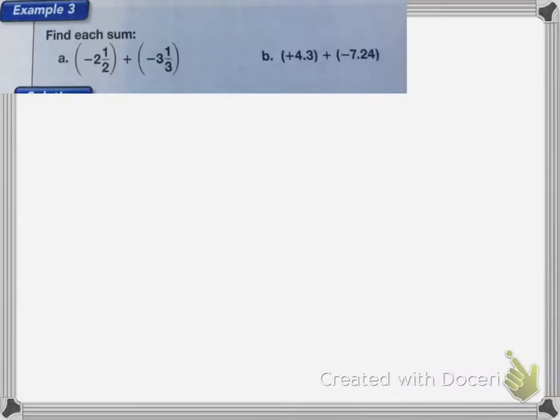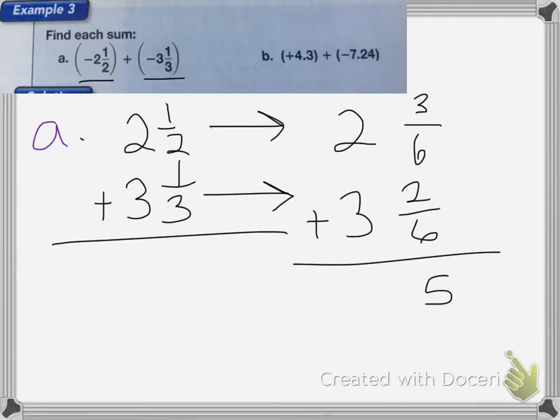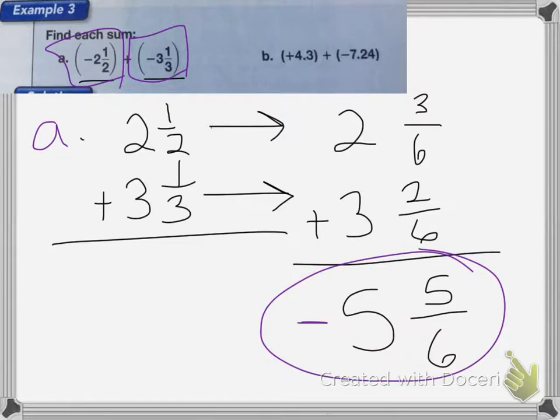In these questions we have fractions and decimals. For part a, since it's a negative and a negative that I'm adding together, I can add these two numbers together and then change my answer to negative at the end. I have 2 and 1 half and 3 and 1 third, so I need to change those so the denominator is the same, which will be 6. So it's going to be 2 and 3 sixths and 3 and 2 sixths. Adding them together, I get 5 and 5 sixths. Now since both of these numbers were negative, my answer has to be negative 5 and 5 sixths.